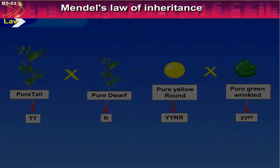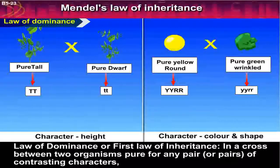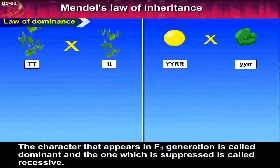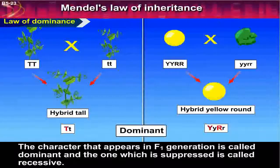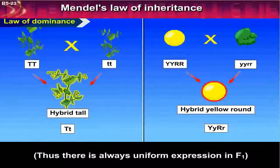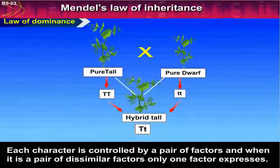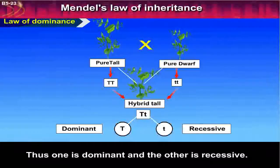Mendel's Law of Inheritance: Law of Dominance. In a cross between two organisms pure for any pair or pairs of contrasting characters, the character that appears in F1 generation is called Dominant, and the one which is suppressed is called Recessive. Thus there is always uniform expression in F1. Each character is controlled by a pair of factors, and when it is a pair of dissimilar factors, only one factor expresses — thus one is dominant and the other is recessive.